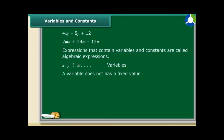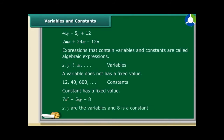Its value is not fixed. On the other hand, a value that does not change is a constant. So, in an equation 7x squared plus 5xy plus 8, x and y are the variables and 8 is a constant.